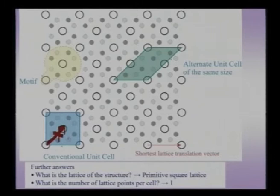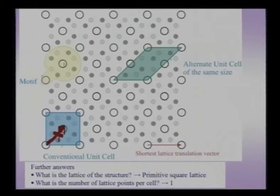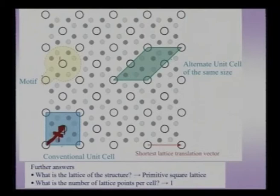The motif for this structure consists of two open circles (A and B), four dark grey filled circles, and four light grey circles — all within the red dotted line shaded yellow for visibility. This motif sits at each lattice point to generate the crystal structure. The lattice is a primitive square lattice with one lattice point per cell. This example highlights the importance of the lattice, the motif, the choice of unit cell, and the shortest lattice translation vector.